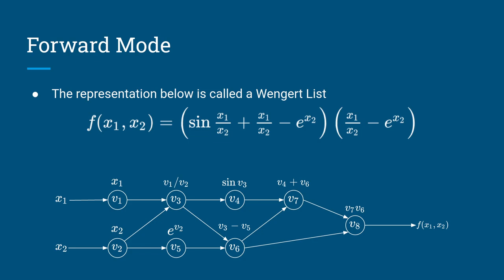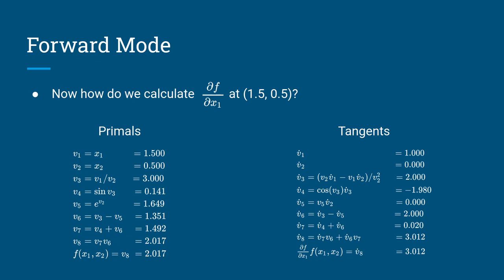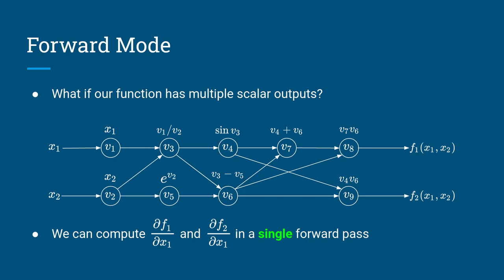At the last node you get the result of the function. As you move forward through the Wengert list, at each node you also calculate the corresponding derivative — the corresponding tangent. For instance, suppose you want to calculate the derivative of f with respect to x1 at the point 1.5 and 0.5. You would get the values of each one of the nodes — called primals — starting with the actual values of the inputs, and then as you move through the nodes you get the value for each one. At the end you get the result of the function, which is 2.017. Meanwhile, while calculating the values at each node, you also calculate the derivatives at each node, applying the corresponding derivative rule. Going node through node, at the very last node you get the derivative of the function with respect to the desired input.